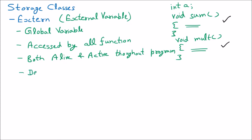The external or global variable is declared outside the function. We declare it on the top, that's why we say it is declared outside the function. If it is declared inside the function, it will not be global.